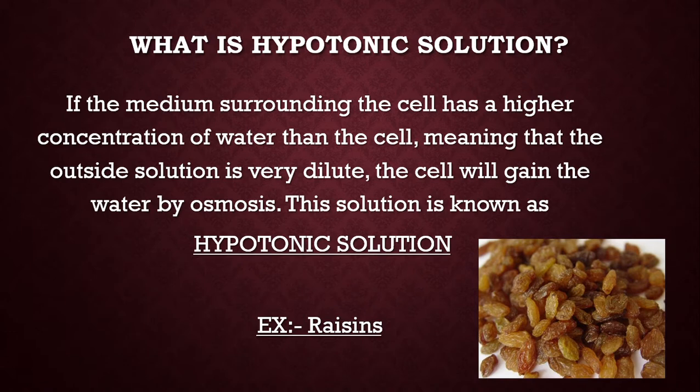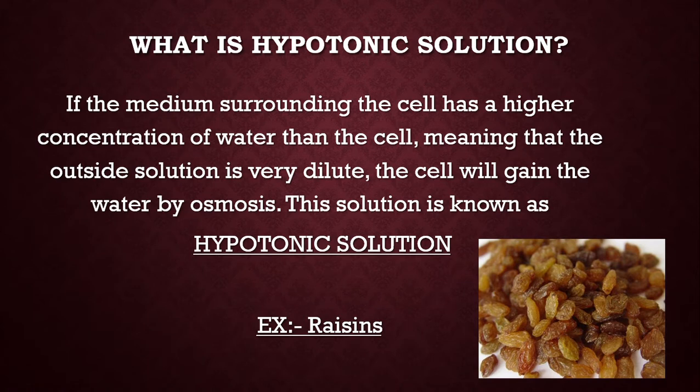Before that, let us know what is a hypertonic solution. If the medium surrounding the cell has a higher concentration of water than the cell, meaning that the outside solution is very dilute, the cell will gain water by osmosis. This solution is known as a hypertonic solution. For example, raisins — raisins have a lower concentration of water, so the water goes inside the raisin through osmosis and the raisin gains the water molecules.